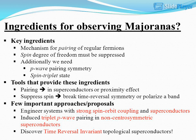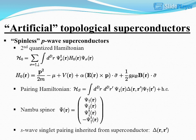Key ingredients for hosting Majorana fermions: a mechanism for pairing of regular fermions is required; the spin degree of freedom must be suppressed; additionally, P-wave pairing symmetry in a spin triplet state is needed. Tools include pairing in superconductors or proximity effect, suppressing spin by breaking time-reversal symmetry or polarizing a band. Important approaches: engineering systems with strong spin-orbit coupling in superconductors, induced triplet P-wave pairing in non-centrosymmetric superconductors, discovering time-reversal invariant topological superconductors, and artificial topological superconductors.